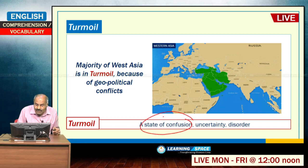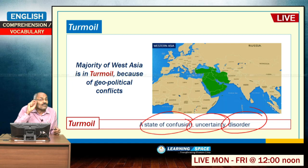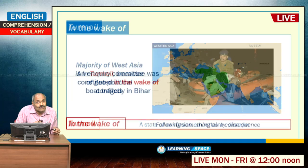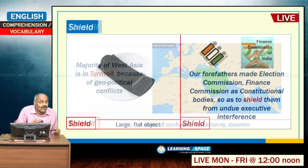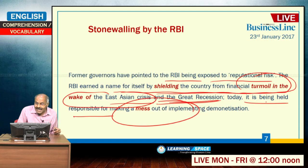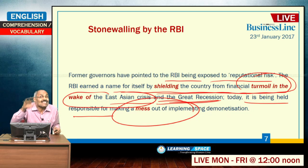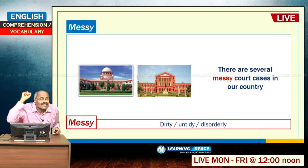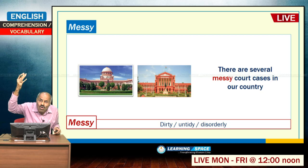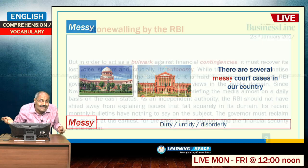In the wake of means following something as a consequence. So the RBI previously shielded our country from the adverse impact of the Great Recession of 2008 and the East Asian crisis of 1997. Today, it is being held responsible for making a mess out of implementing demonetization. Messy means a totally disorderly, untidy situation. The good name of the RBI has been lost — it previously had a lot of reputation, but now it has created a mess.